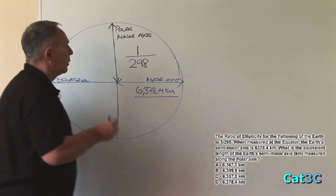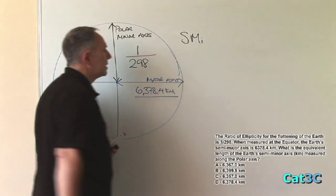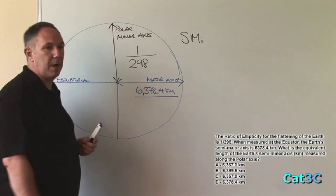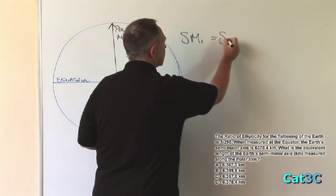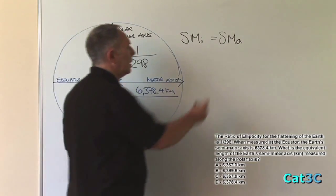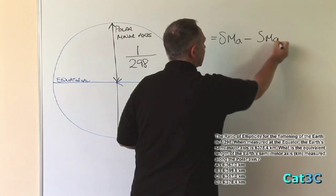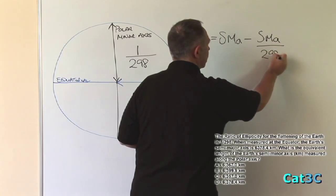The formula we will use is semi-minor axis, abbreviated to SMI, is equal to semi-major axis, abbreviated to SMA, minus the semi-major axis, divided by 298.